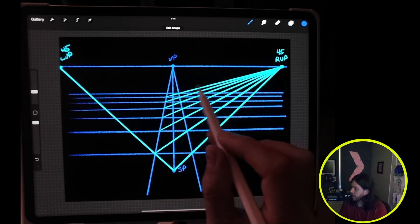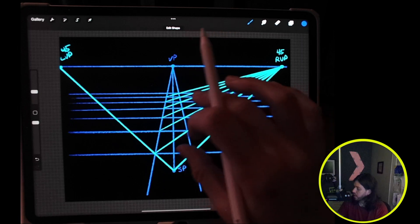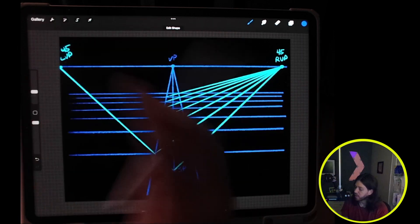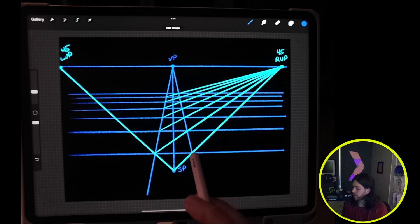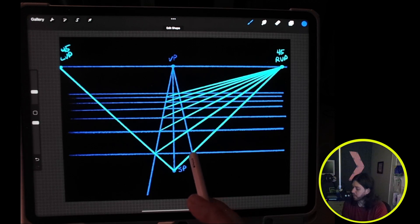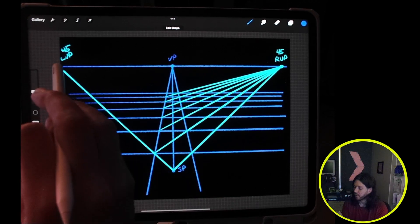Now what I'm going to do is go ahead and draw the lines to the left vanishing point using the opposite method, so starting from the right bottom of the triangle up to the left vanishing point.